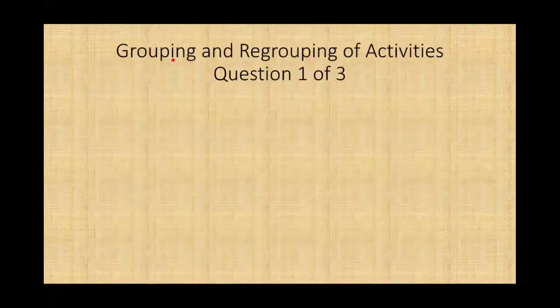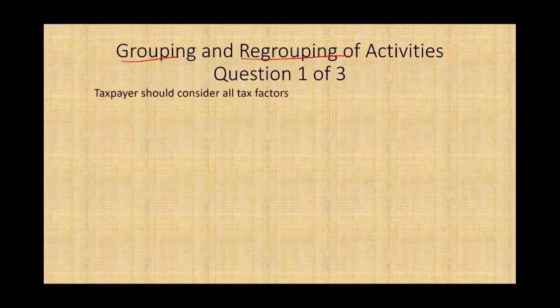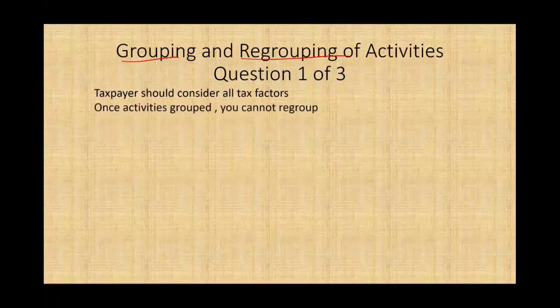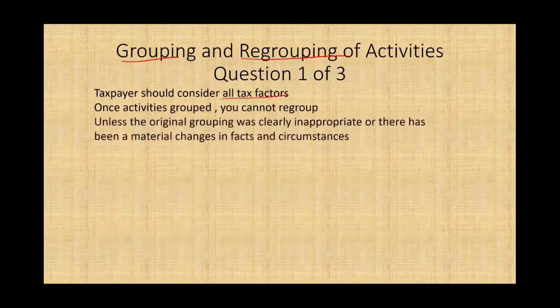Another issue that comes up with activities is grouping and regrouping. Taxpayers should consider all tax factors — should you combine A and B, or treat A and B separately? Bear in mind, once activities are grouped you cannot regroup them, so you have to consider all tax factors before doing so. You can regroup them only if the original grouping was clearly inappropriate or there has been a material change in the facts and circumstances.